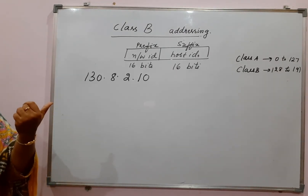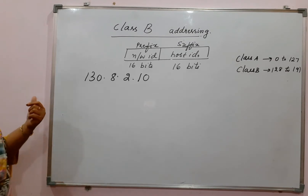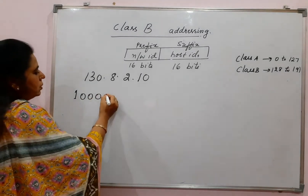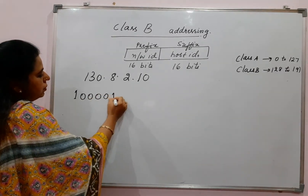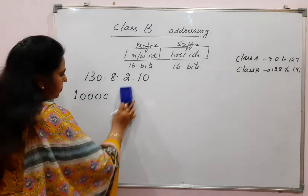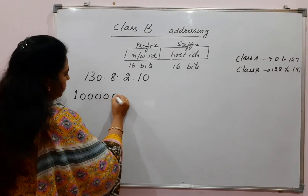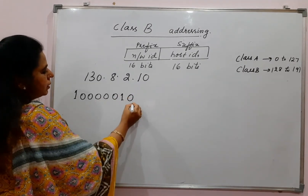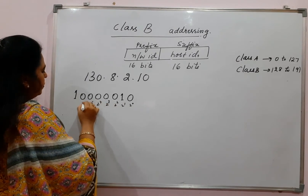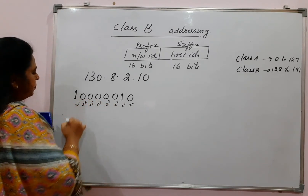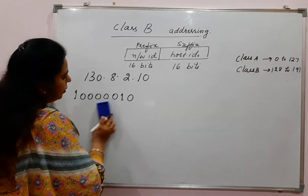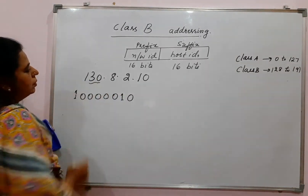130 in binary is 10000010. To verify: 2 to the power of 7 is 128, plus 2 gives 130. So this is the binary value for the first decimal number.